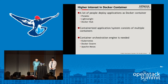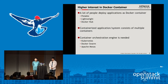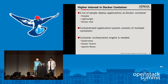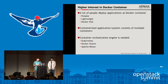The container is lighter than a VM, so we can use compute resources more effectively. Docker Hub is also useful — we can download images from Docker Hub and create our own image on top of that. When we use containerized applications, we usually use multiple containers, and we need to manage those containers with an orchestration engine such as Kubernetes, Docker Swarm, and Apache Mesos.